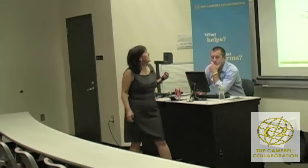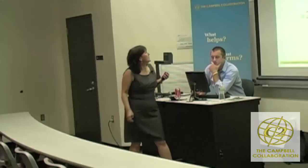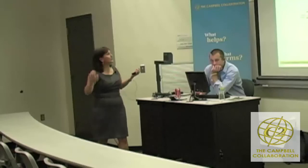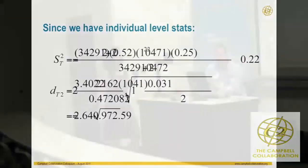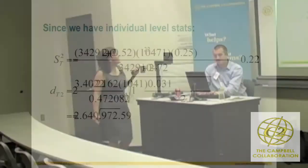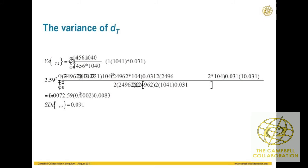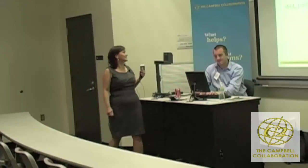With everything plugged in, I get an effect size of 2.59. And then there's the variance calculation — which is quite messy — so I did it many times and got different answers and eventually stopped.